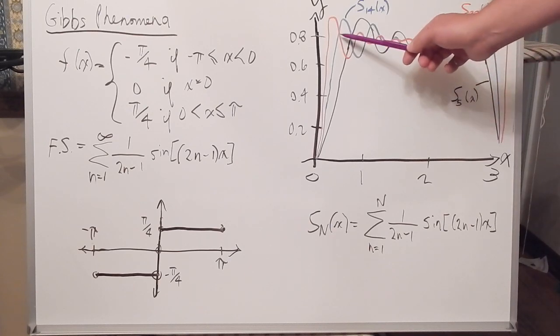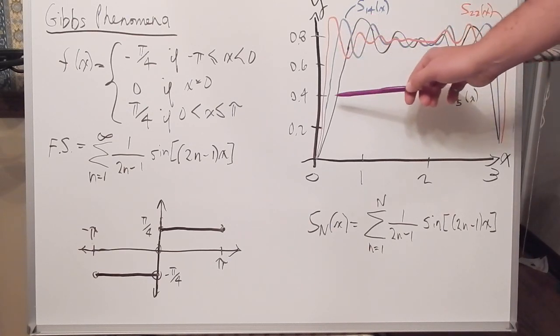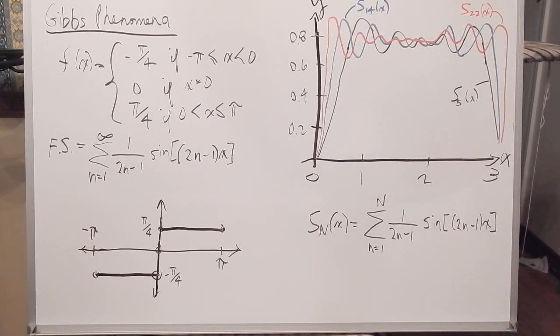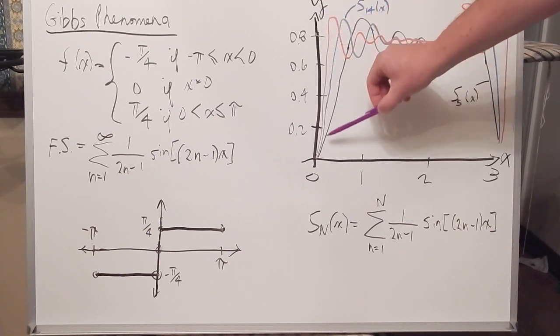And then the blue line, I've plotted the 14th partial sum. And then the red line here is the 22nd partial sum. And each of these partial sums shows a peak greater than pi over 4. And the peak is near x equals zero.